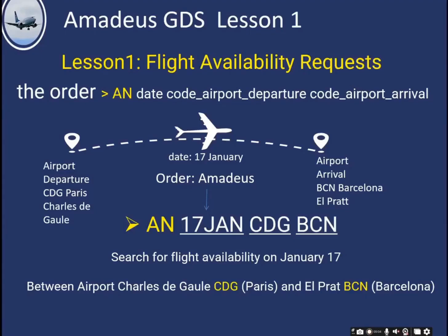This is the first course on Amadeus GDS. Today we will learn how to search for flight availability — how to ask the Amadeus system what flights are available from a certain date, at a departure airport, to an arrival airport. The main command is AN, which means neutral availability. We need to enter the date, the departure airport code, and the arrival airport code.